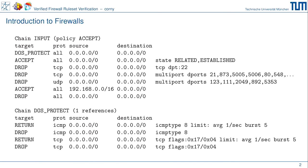Thank you all for joining my talk. This talk is called 'Verified Firewall Ruleset Verification.' Let's first refresh our knowledge about firewalls. Here's a firewall ruleset I found on a network attached storage — it's a Linux iptables firewall. Let's walk through that ruleset to see what it does. We have a packet for this box; the box will walk through all these firewall rules sequentially until it finds a matching rule.